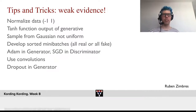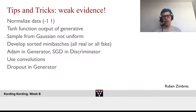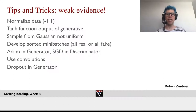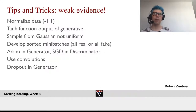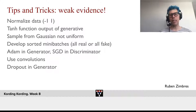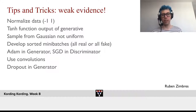Making GANs work often consists of lots of different tricks. For example, people found that normalizing the data to the interval of minus 1 to 1 is a good idea. Using tanh for the output of the generative model is helpful. Sampling from a Gaussian as opposed to a uniform distribution makes things better. Sorting by mini-batches where the whole mini-batch is either all real or all fake helps convergence. Using Adam in the generator and vanilla SGD in the discriminator is a good idea. Using convolutions is really good, and using dropout in the generator is really good.